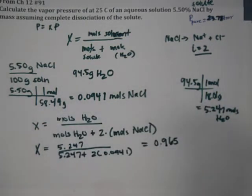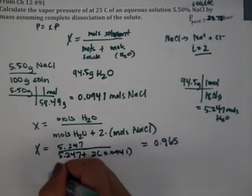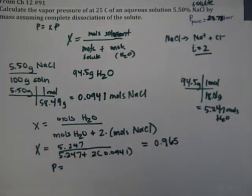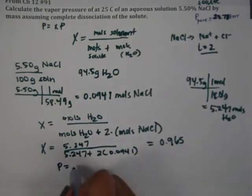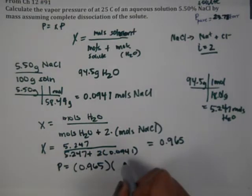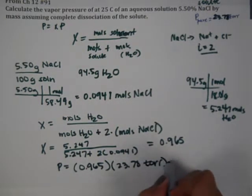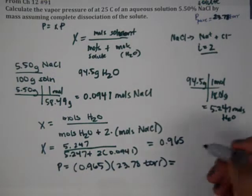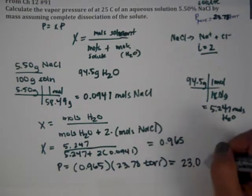So, now we take the mole fraction. Our final pressure will equal the mole fraction times the pure. So, mole fraction of 0.965 times the pure 23.78 torr. So, our final pressure is about 23.0 torr.